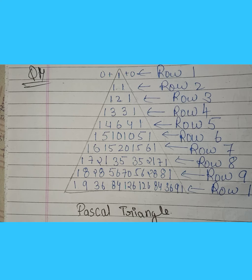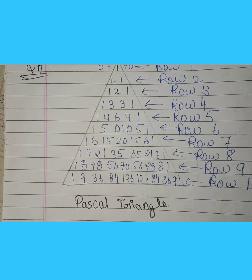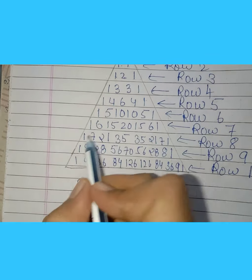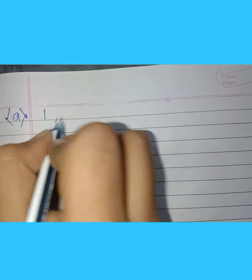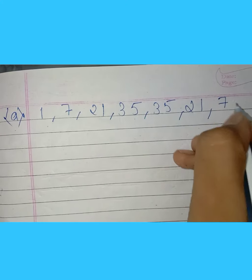Now I am going to solve all the questions given in the book up to Part F. Let's take Part A: write row 8 of Pascal's Triangle. The numbers of row 8 are: 1, 7, 21, 35, 35, 21, 7, and 1. These are the numbers of row 8.